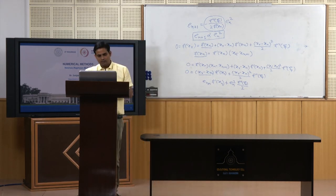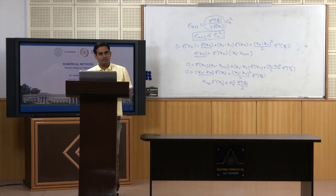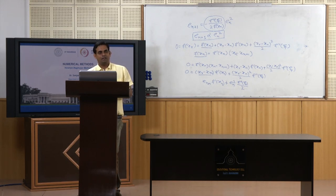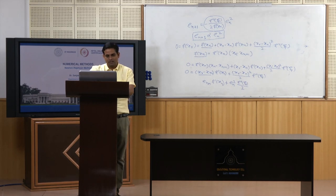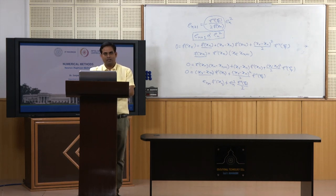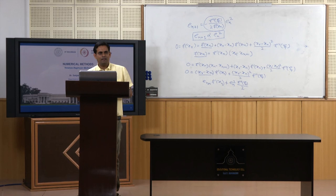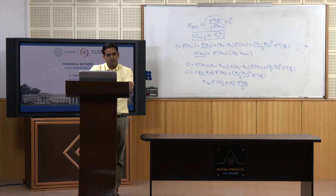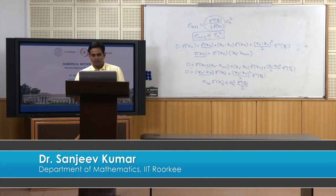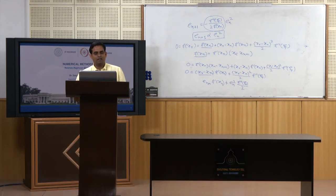So in this lecture we have learned about the Newton-Raphson method. First, we derived it using a geometric illustration. Then we derived it using Taylor series expansion of f(x). We solved two examples: one quite simple and another involving a transcendental equation. Finally, we looked at some drawbacks of this method, explained them graphically, and proved that this method has quadratic convergence. Thank you very much.